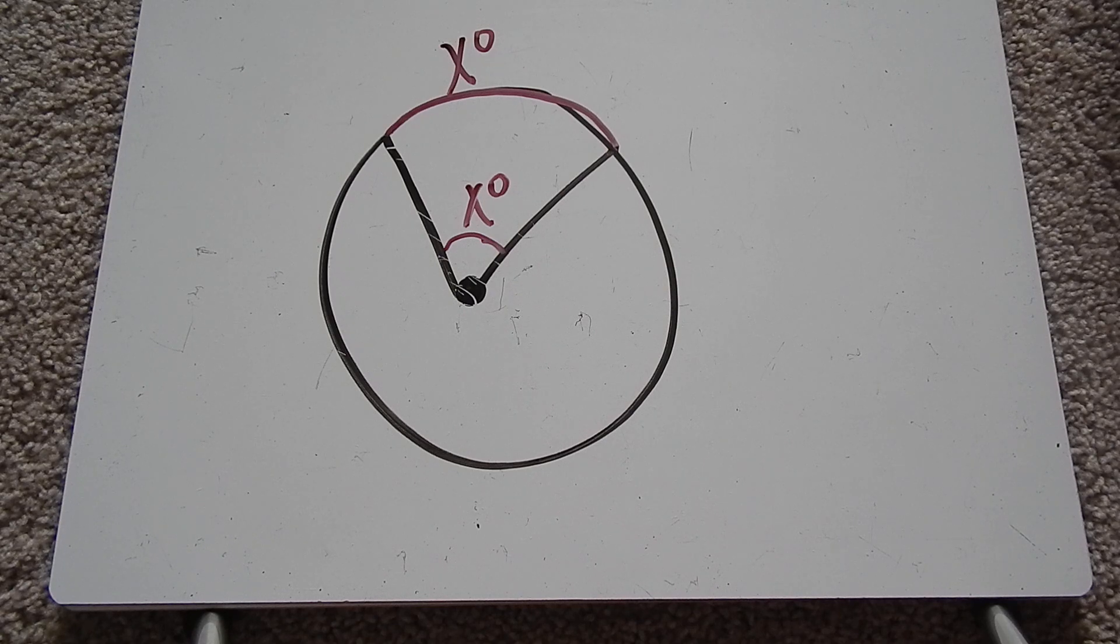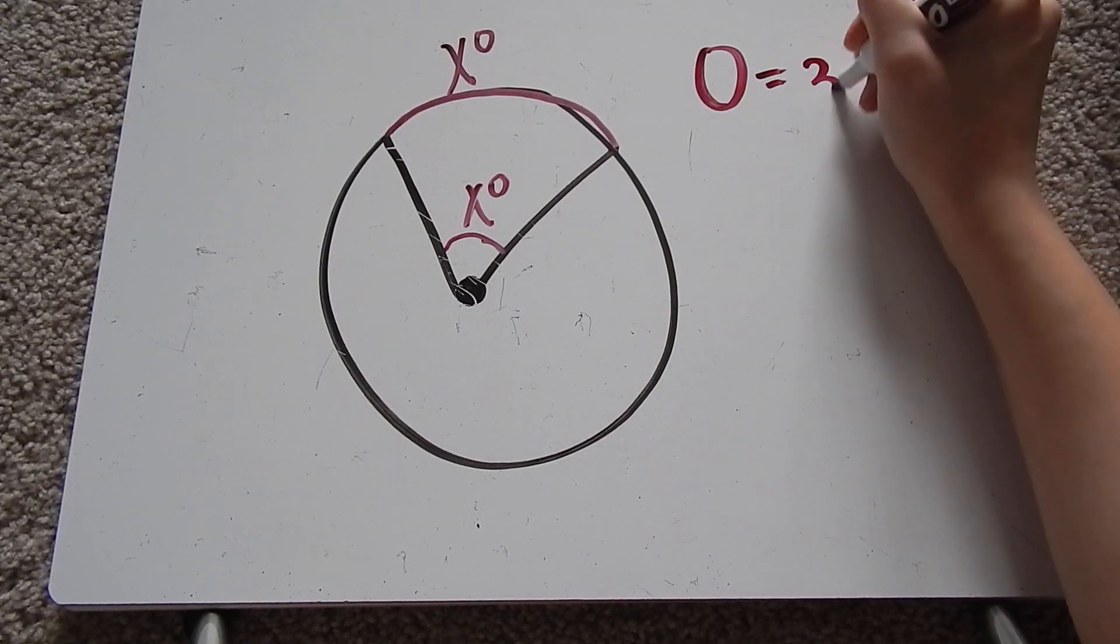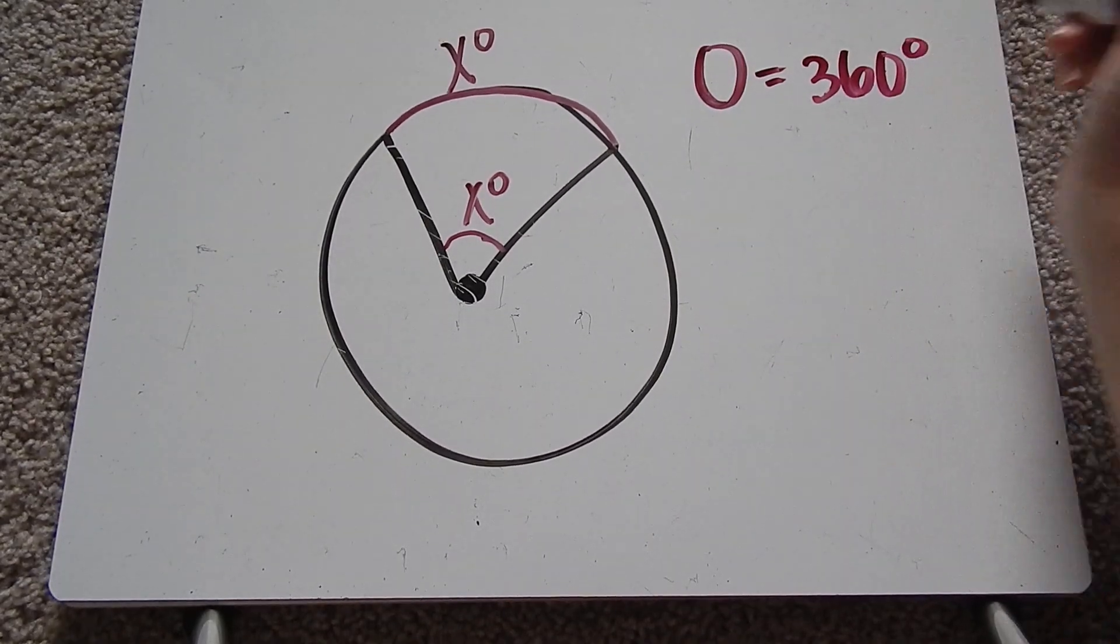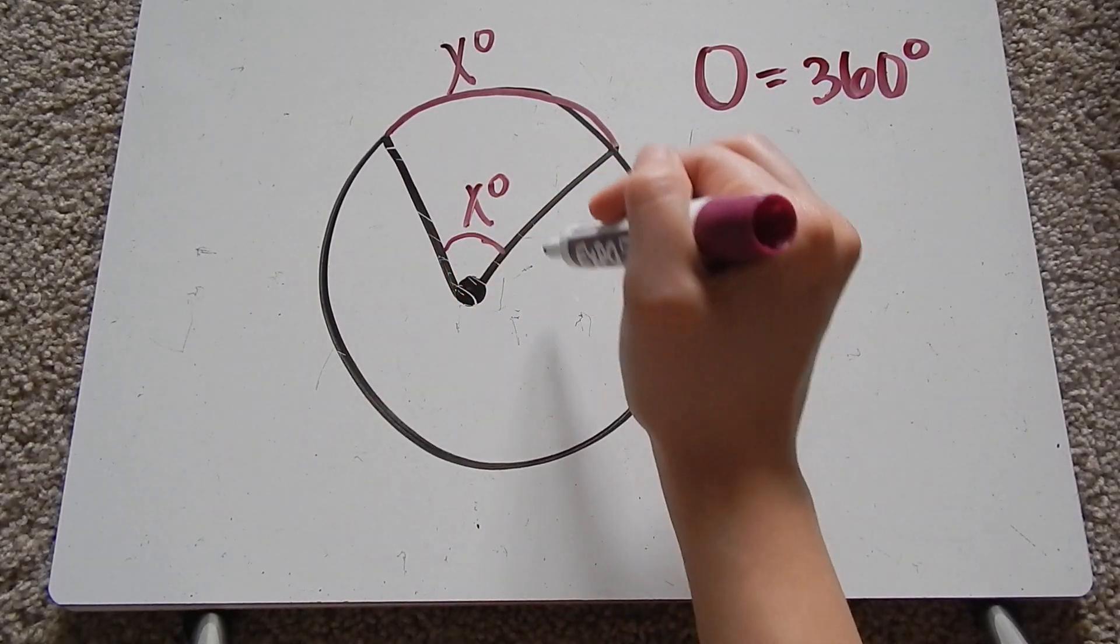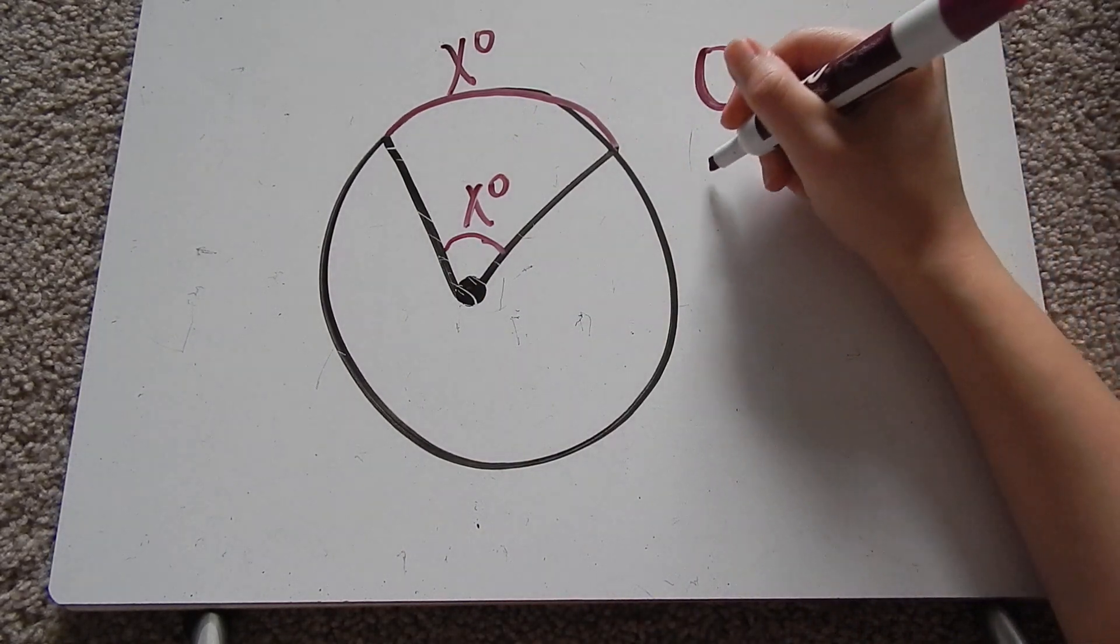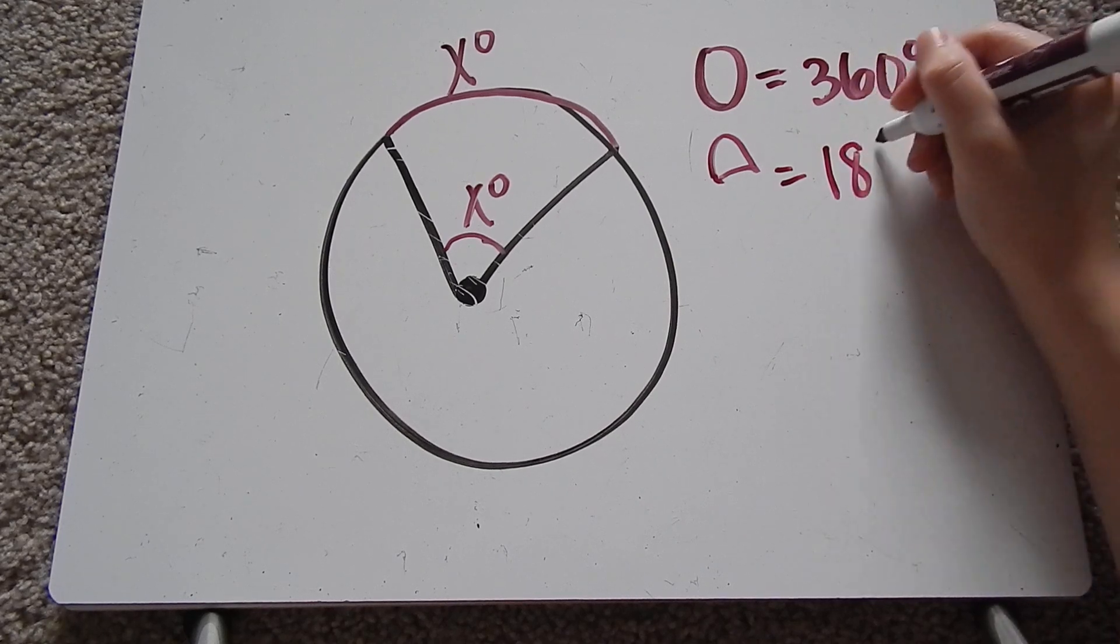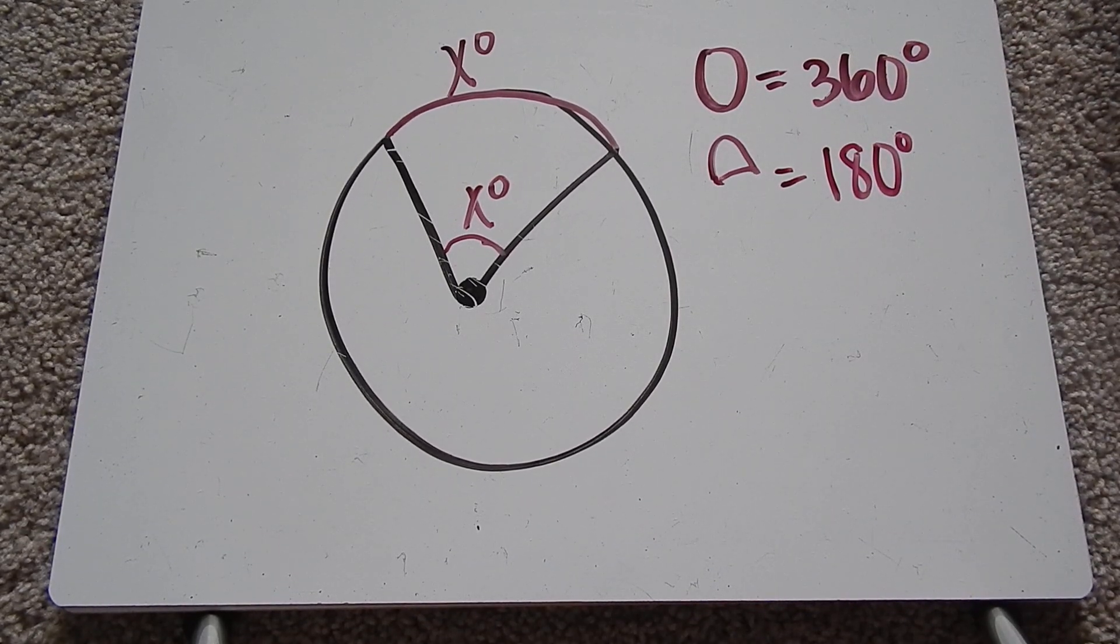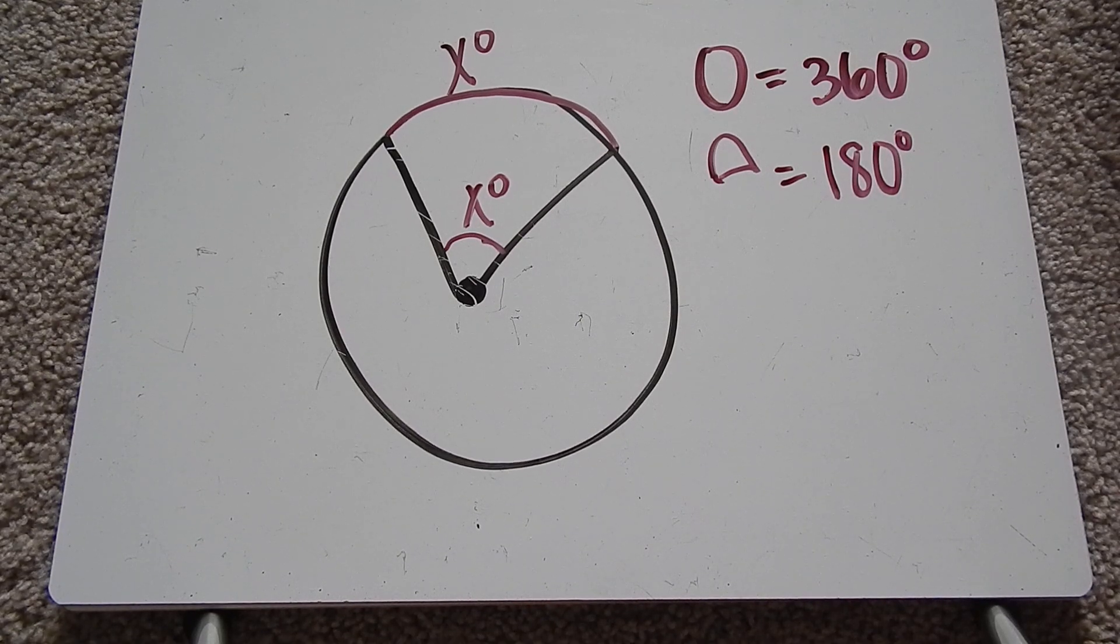Some things we want to remember as we go through this is that an entire circle is equal to 360 degrees. That means the outside of the circle is 360 and the inside angles is equal to 360. Half the circle is equal to 180 degrees. So we just want to keep that in mind as we are going through the example problems.